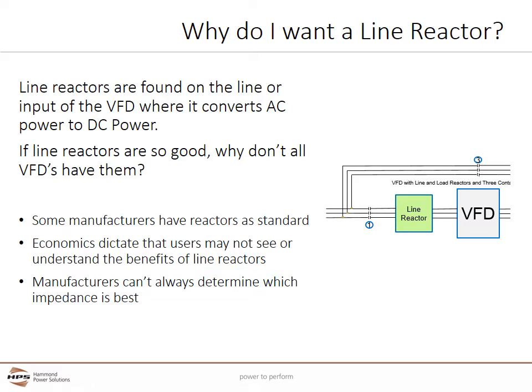Line reactors are found on the line or input of a VFD where it converts AC power to DC power. If line reactors are so good, why don't all VFDs have them? Some manufacturers actually do include line reactors as standard in their VFDs. Economics also dictates that users may not see or understand the benefits. Additionally, manufacturers can't always determine which impedance is best. There are situations where a line reactor isn't just suggested but is truly needed.